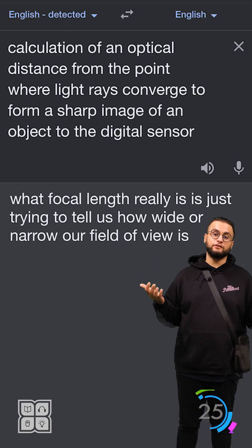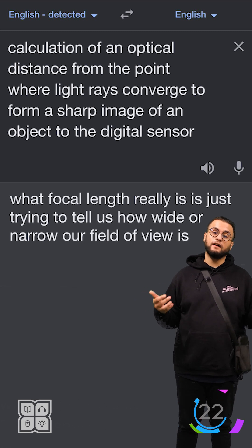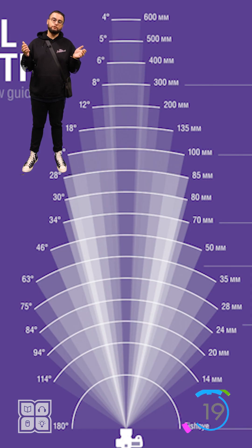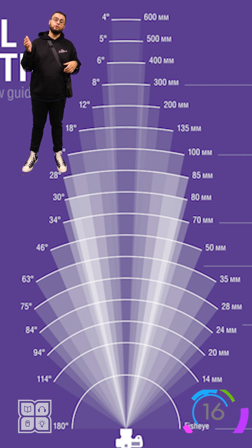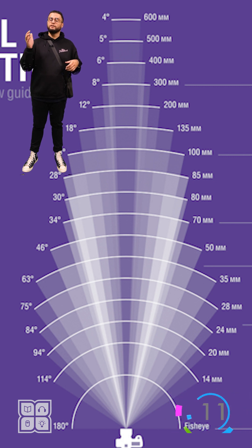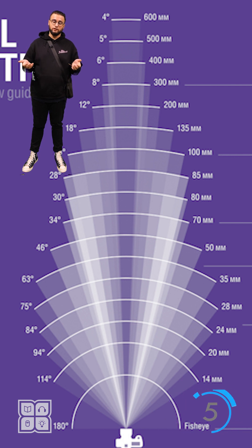Translating what I just said into English, what focal length really is is just trying to tell us how wide or narrow our field of view is. Think of your field of view like a cone. The wider that cone is going to be, the more things your lens is going to be able to capture. The more narrow your field of view is going to be, the less things you're going to be able to capture, but the more zoomed in and focused you're going to be on one specific subject.